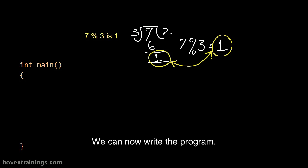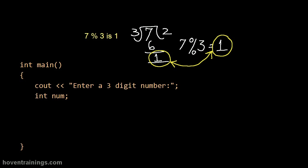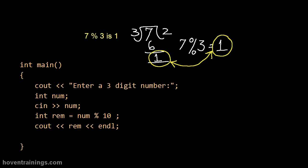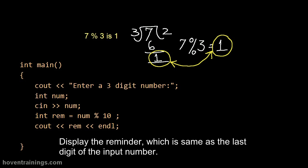We can now write the program. Obtain the remainder after dividing the number by 10. For this we should use the modulus operator. Display the remainder, which is same as the last digit of the input number.